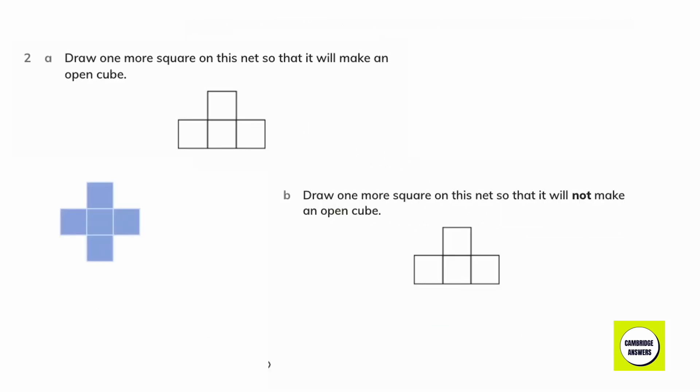Draw one more square on this net so that it will make an open cube. We are going to add the square over here. Draw one more square on this net so that it will not make an open cube.